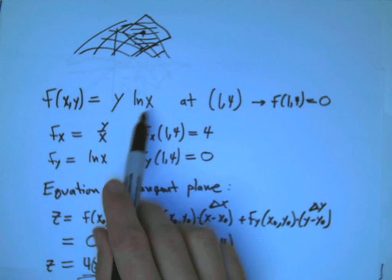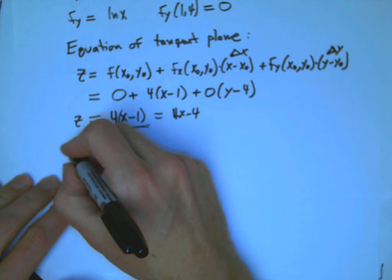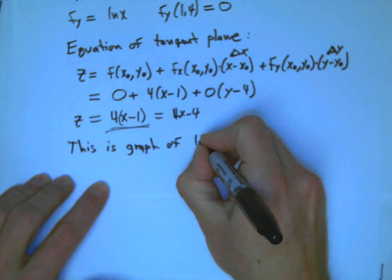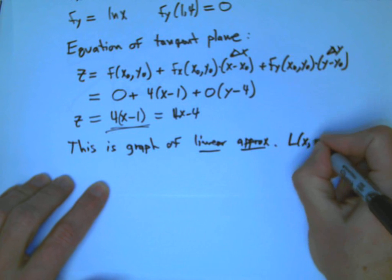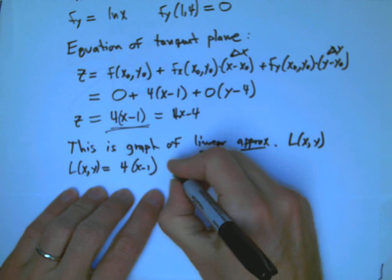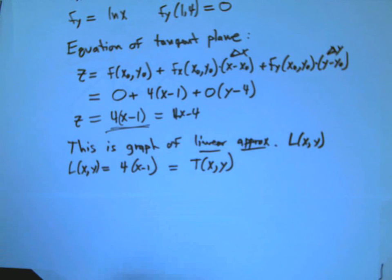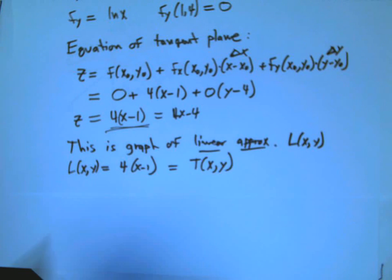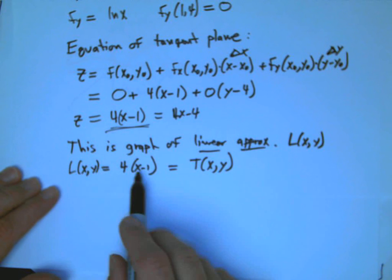That's one interpretation, the geometric interpretation, the equation of the tangent plane. But we want to think about functions, and this is really a method of approximating a complicated function by a simpler one, very much like the story in one variable calculus. This is the graph of the linear approximation, L(x,y). That's the handout's notation. L(x,y) equals 4(x-1). Our main text uses T for tangent approximation. It happens to not involve y here because the partial derivative with respect to y happened to be 0, but it really is always a function of x and y.